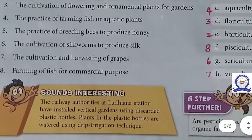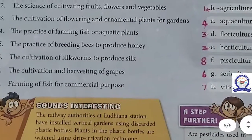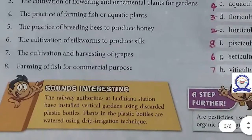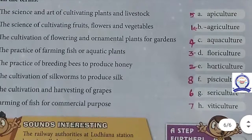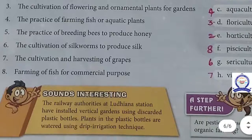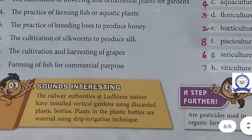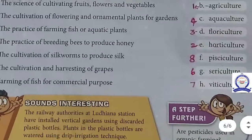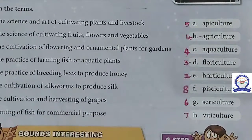The practice of farming fish or aquatic plants is Aquaculture. The practice of breeding bees to produce honey is Apiculture. The cultivation of silkworms to produce silk is Sericulture. The cultivation of grapes is Viticulture.